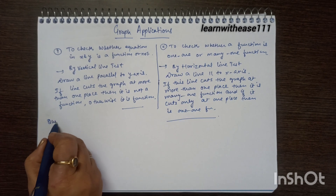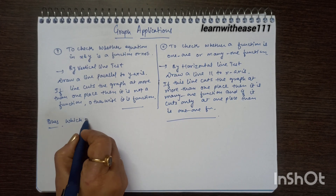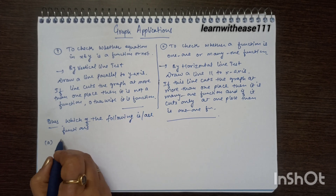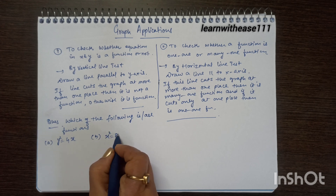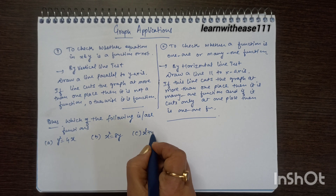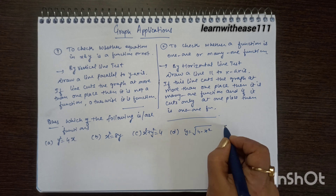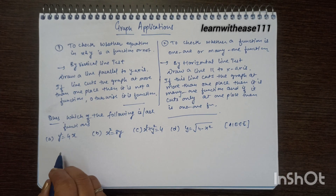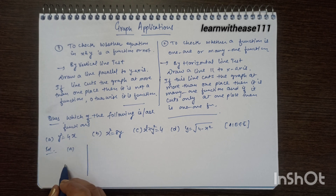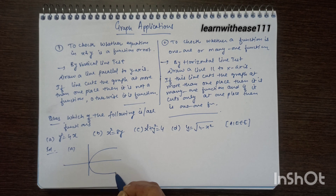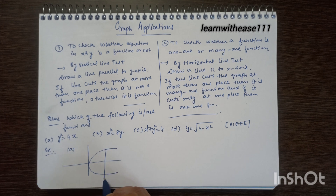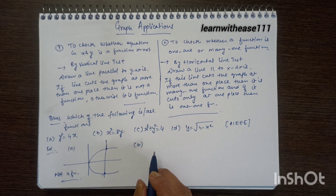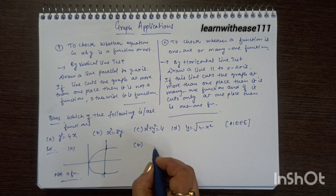A question from AIEEE asks which of the following are functions. We need to check each one. y² = 4x is a right-handed parabola — drawing a vertical line gives two intersection points, so it is not a function. x² = 8y is an upward parabola — a vertical line cuts it at only one place, so this is a function.